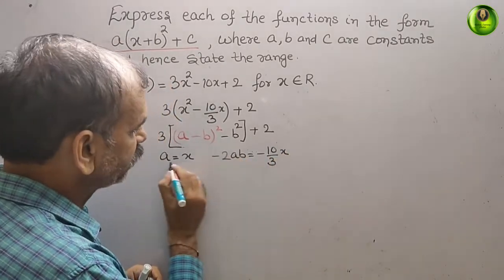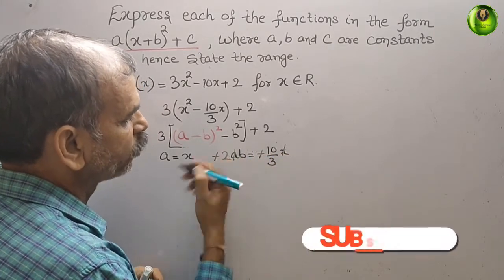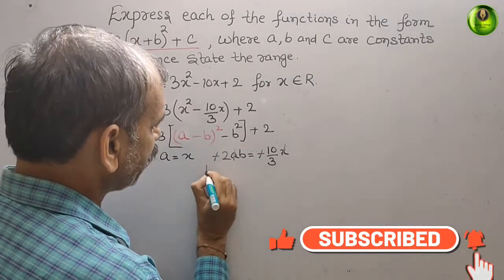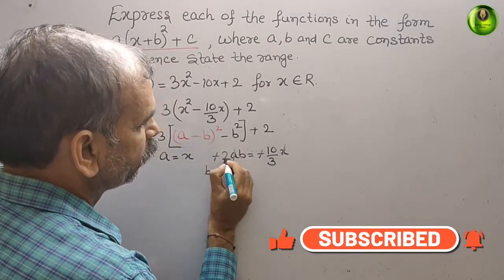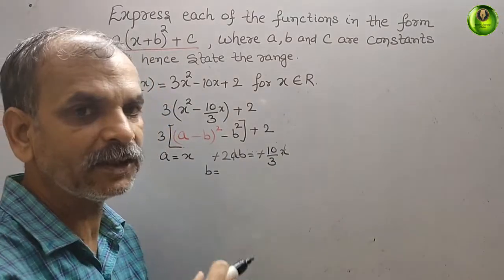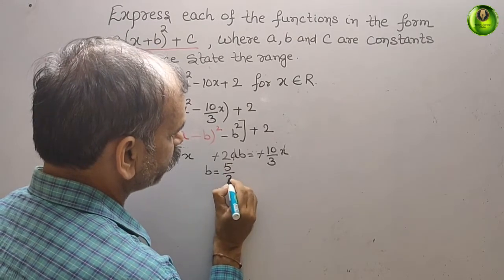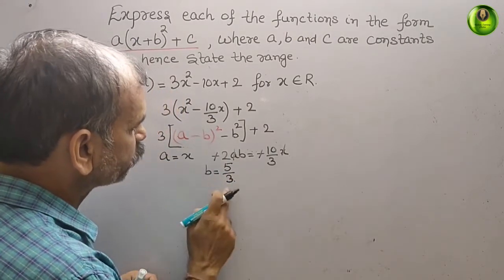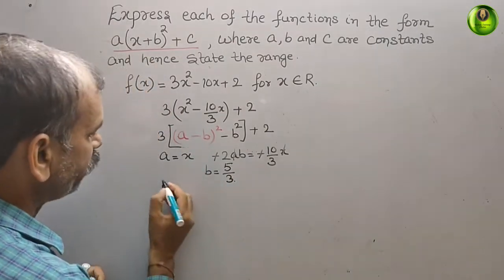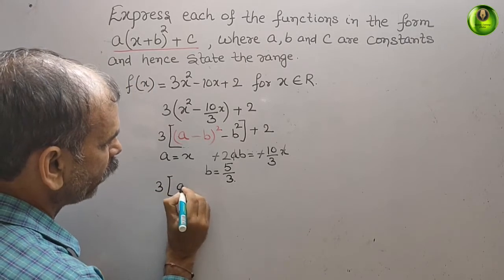Since a is x, we can cancel it. The minus signs cancel too. So b = 10/6, which simplifies to 5/3. Therefore b is 5/3. Now we substitute this value back into the expression.